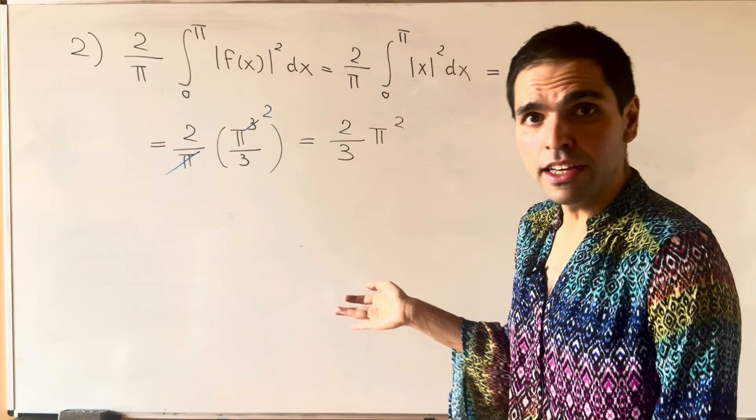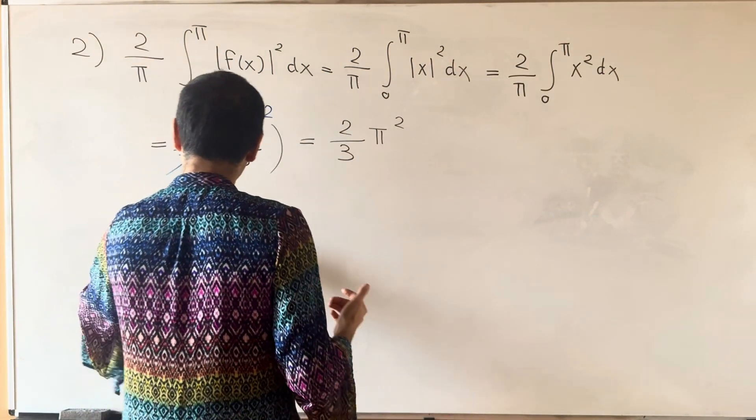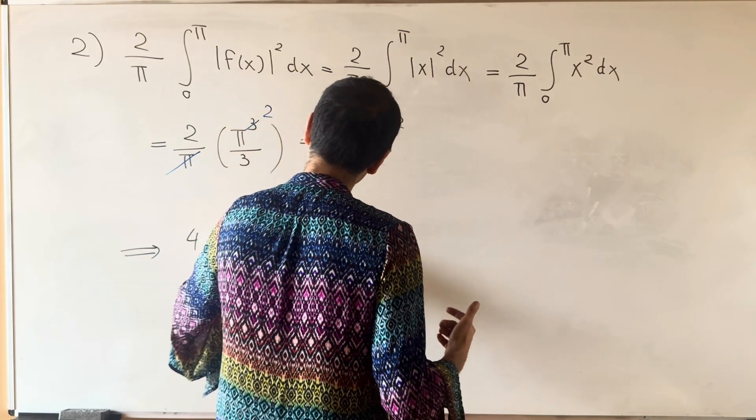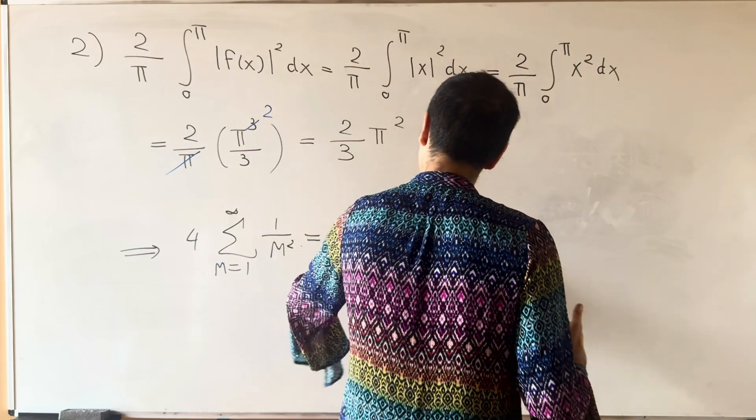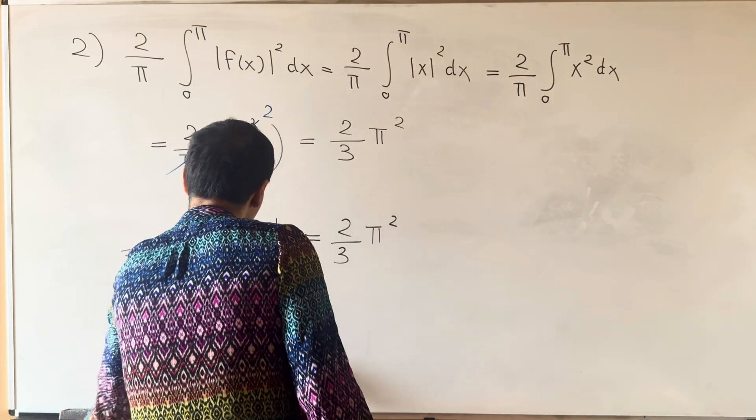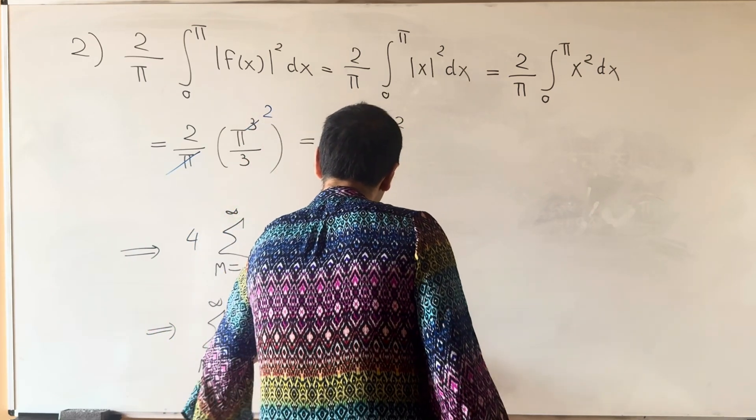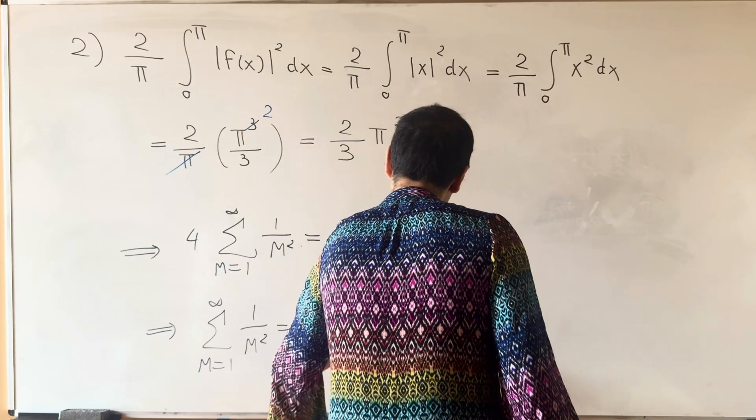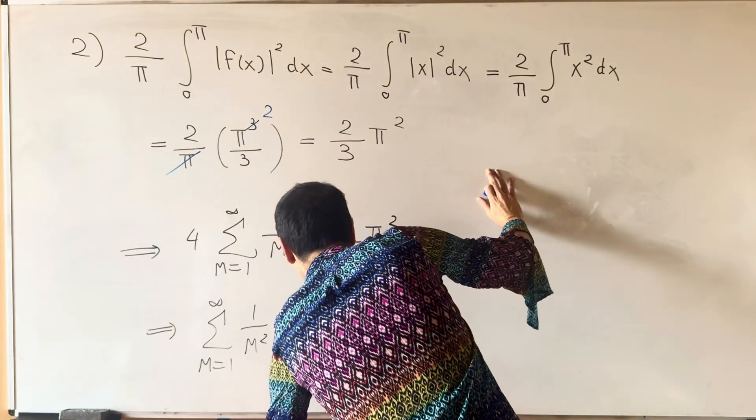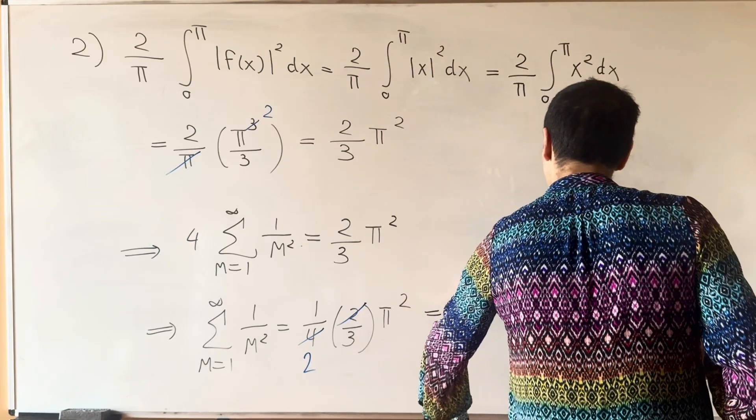And now combining everything, we then end up getting 4 times the sum from 1 to infinity of 1 over m squared equals 2 thirds π squared. And then what is the sum we're looking for? So the sum from 1 to infinity of 1 over m squared is 1 fourth times 2 thirds π squared. So this 2 and this 4 cancel out with an extra factor of 2. And so in the end, we end up getting π squared over 6.